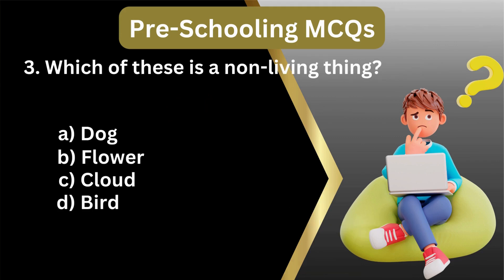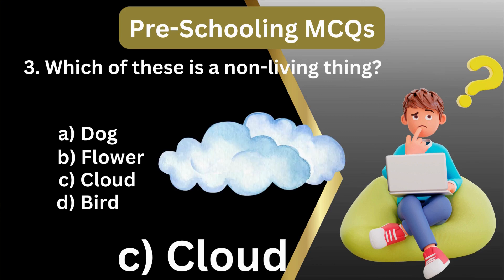3. Which of these is a non-living thing? A. Dog, flower, cloud, bird. Answer: C. Cloud.